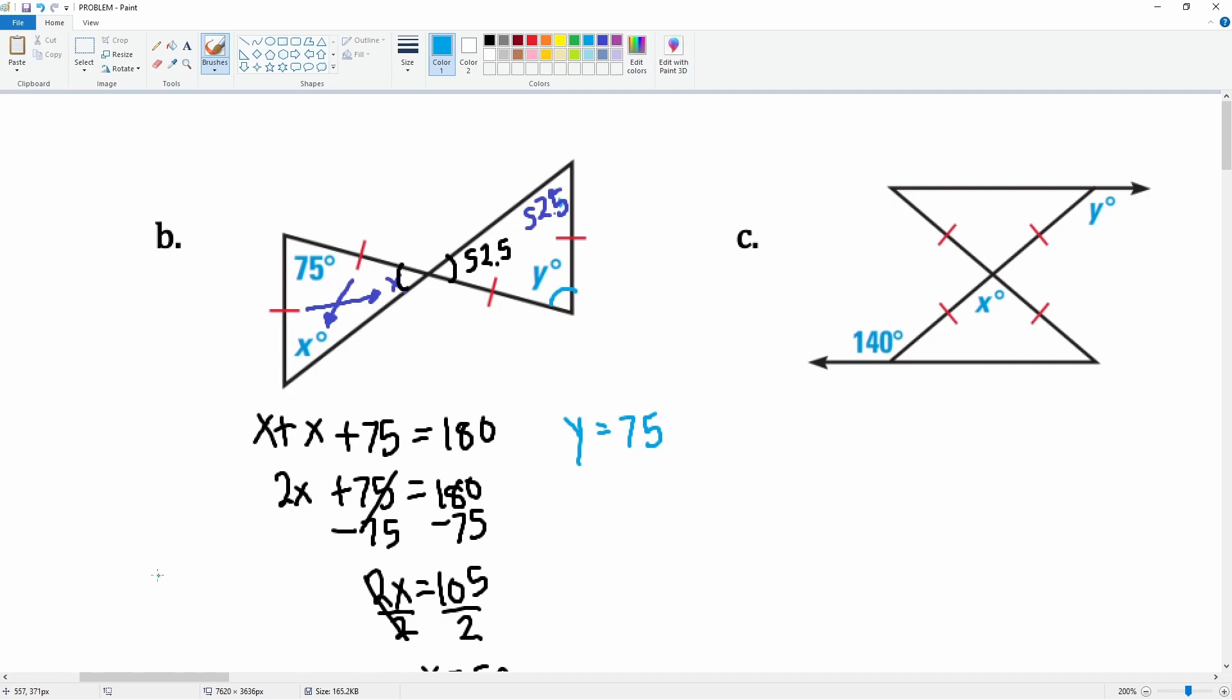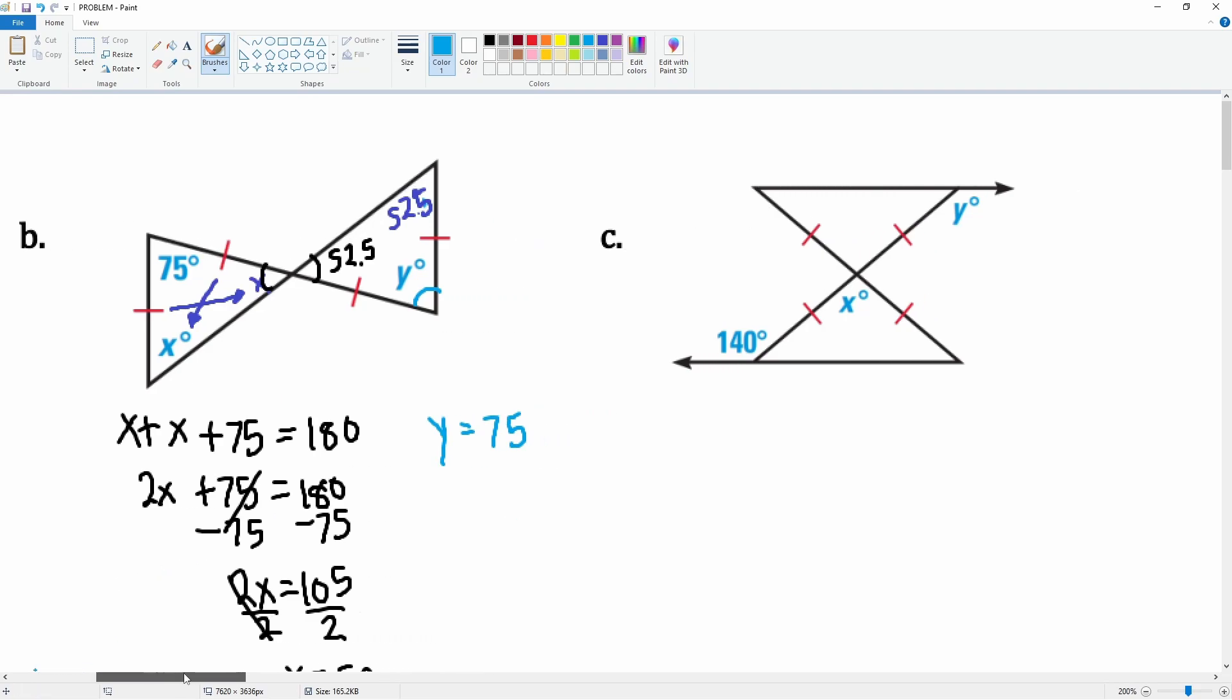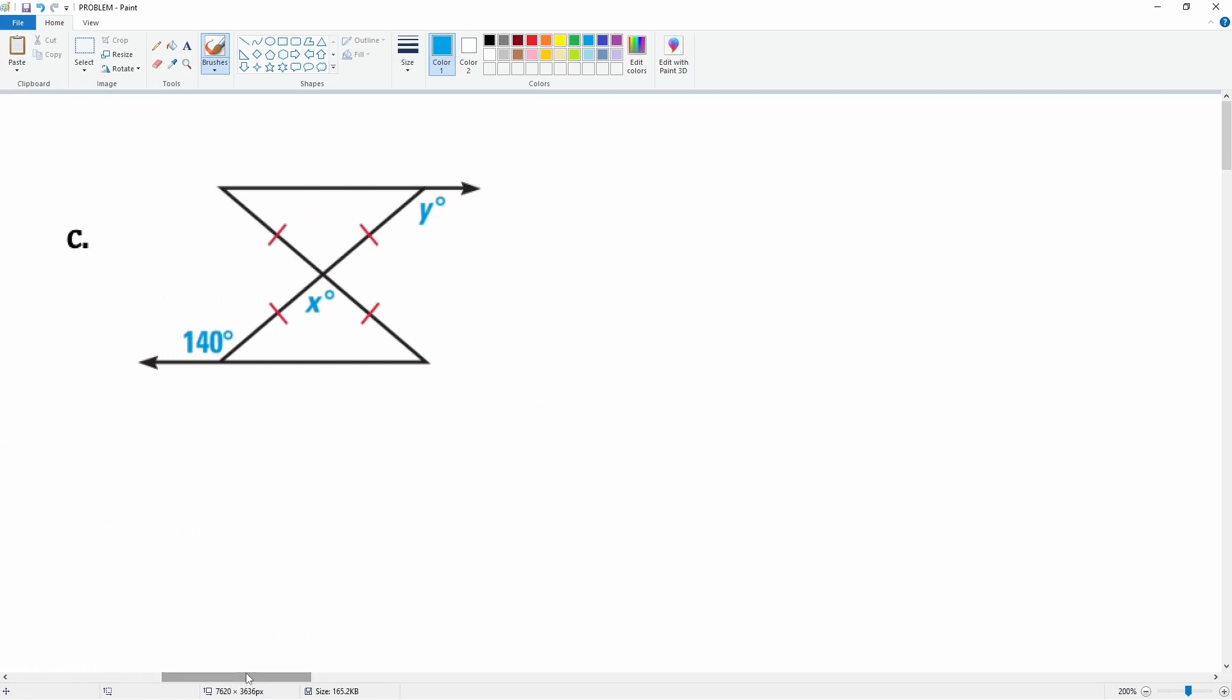And then c. We can use linear pair because this forms at 90 degrees, so 180 minus 140 gets you 40 degrees here. If this is 40, this is also 40 because notice the red marks that gives you this relationship.